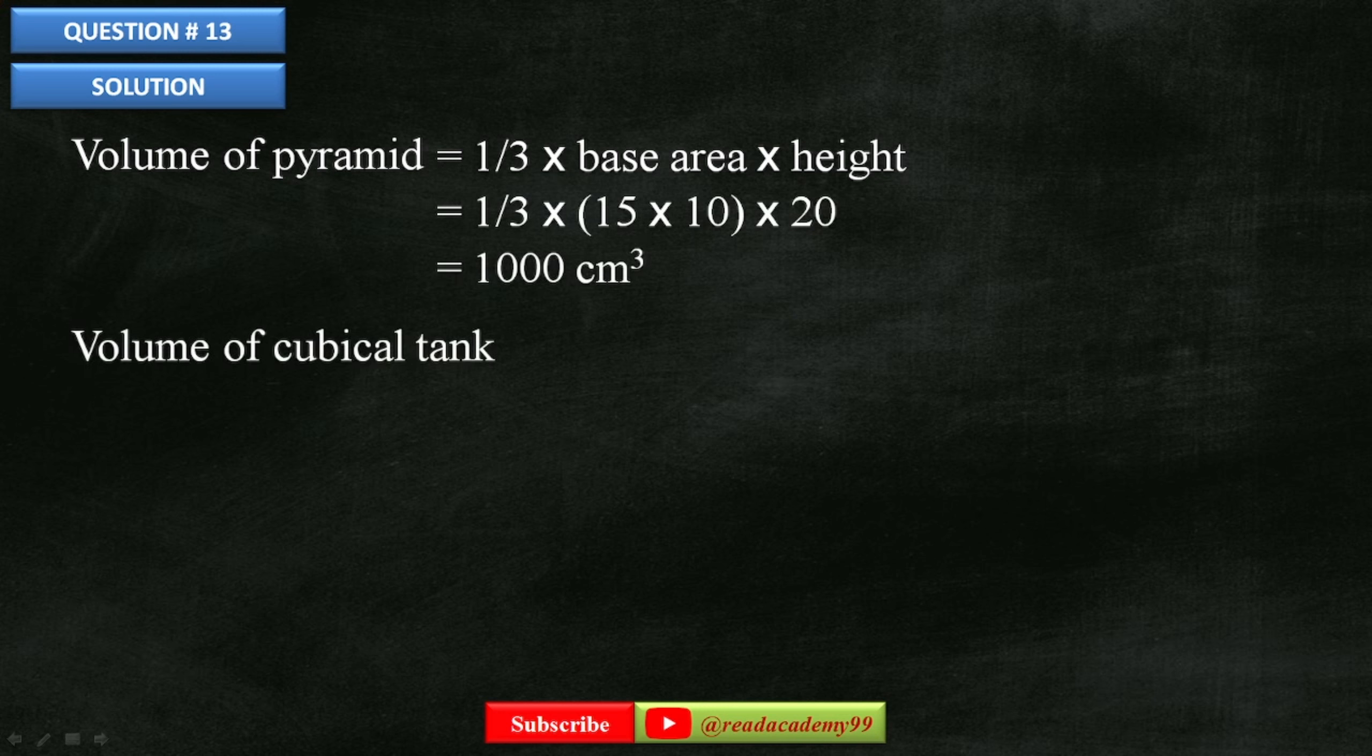Now let us find the volume of the cubical tank using this formula: length times breadth times height. Substituting the values, 30 times 30 times 30, which is equal to 27,000 cm³.